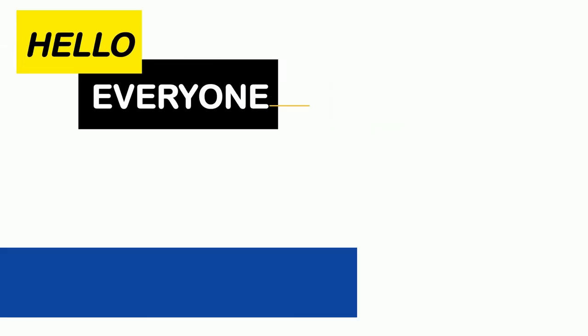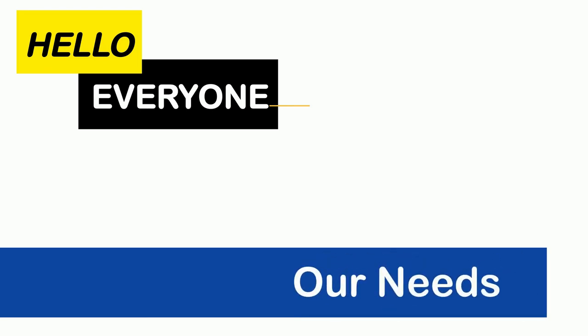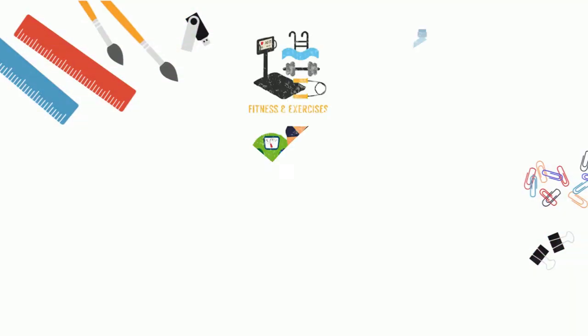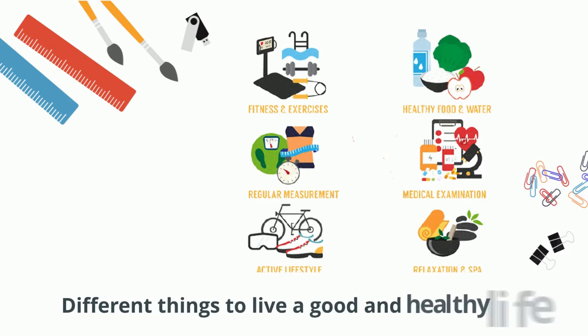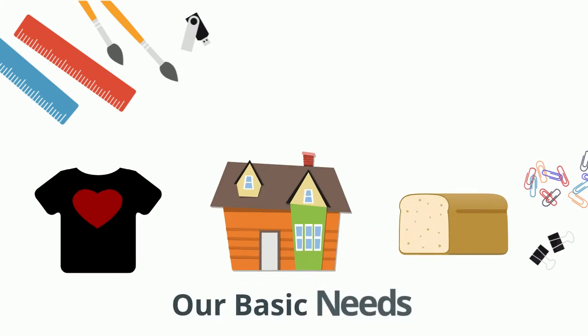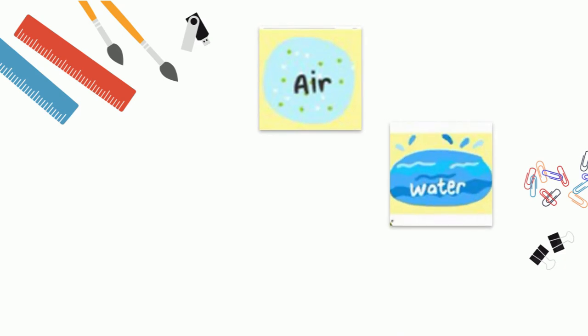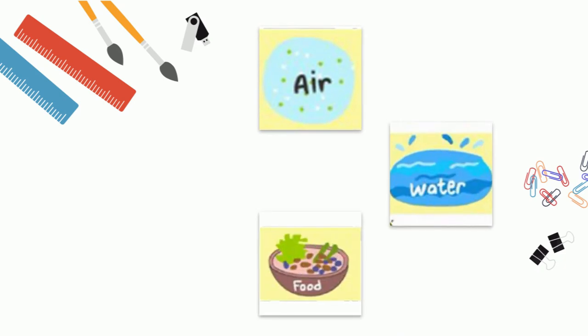Hello everyone, today's topic is our needs. Here we will learn what our needs are and how they are fulfilled. We need different things to live a good and healthy life. Some of them are our basic needs, without which we cannot survive. These are air, water, food, and shelter.